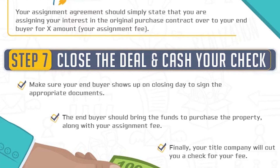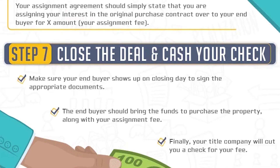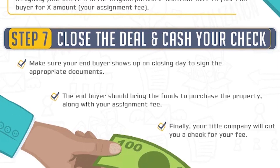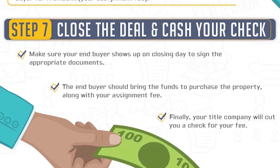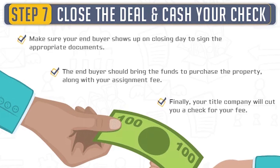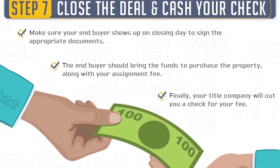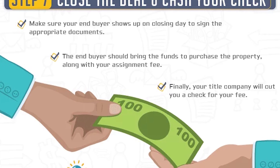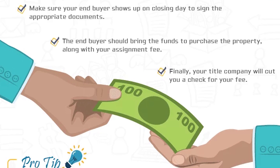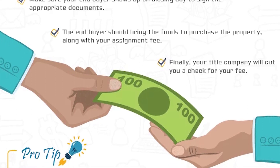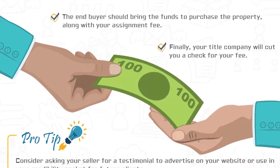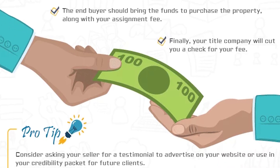All closing costs will be paid by the buyer, and the seller will receive keys to their property unless otherwise agreed. There were two assignment clauses in both contracts, so the wholesaler will not transfer the property into their own name. The end buyer is usually an investor who will put the property in their name or their company's name, which is a way to avoid paying transfer taxes on two separate transactions.